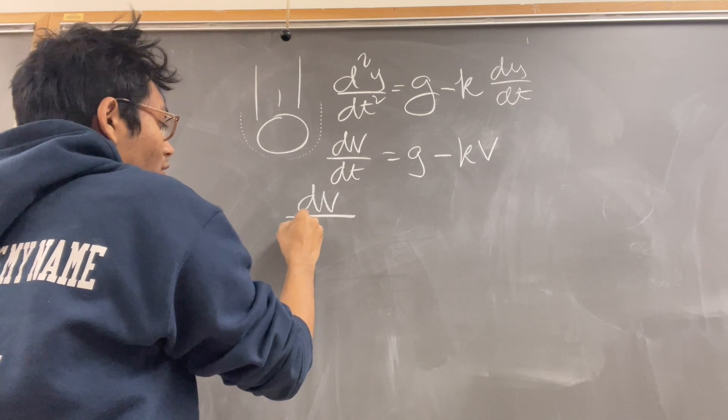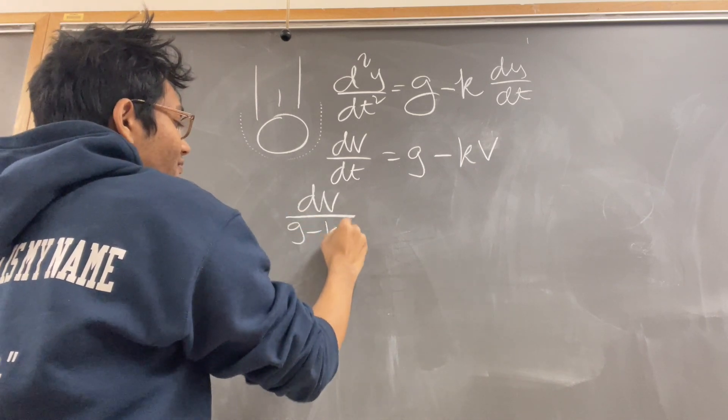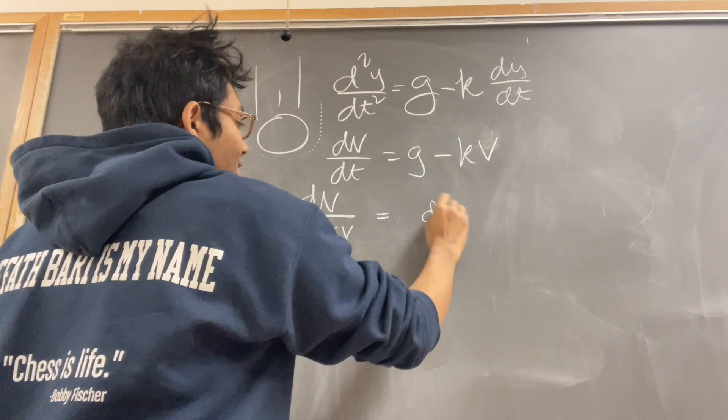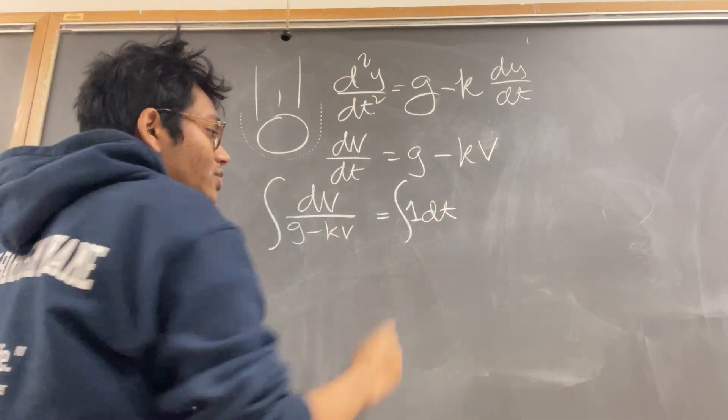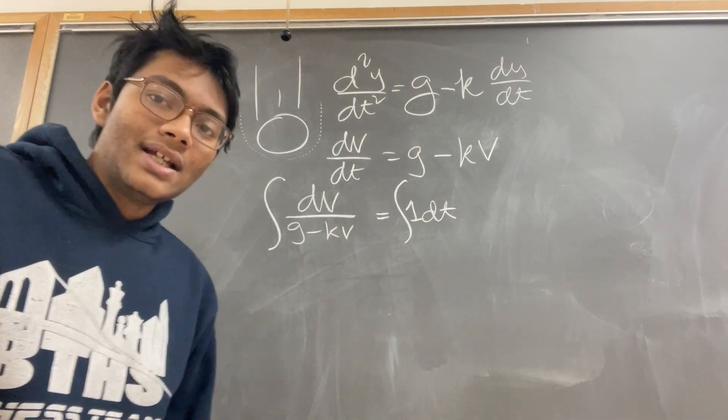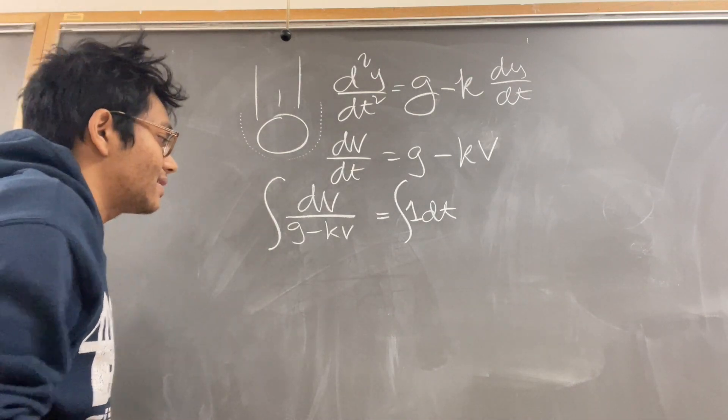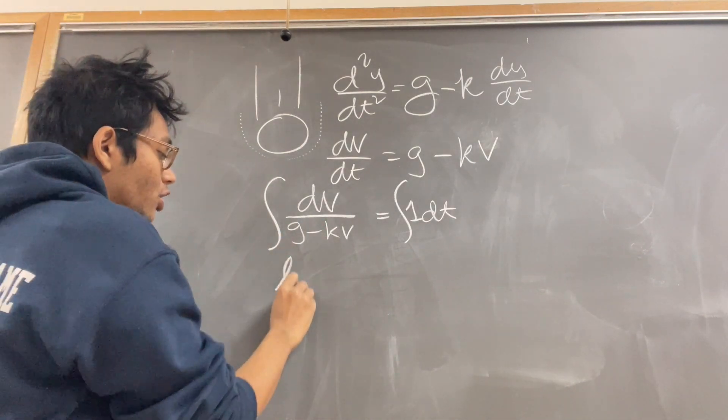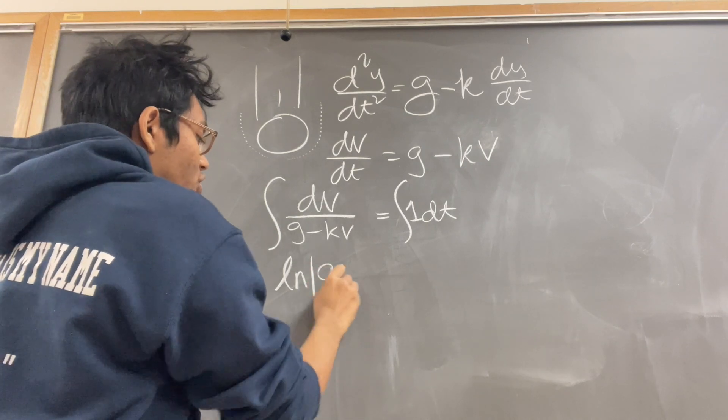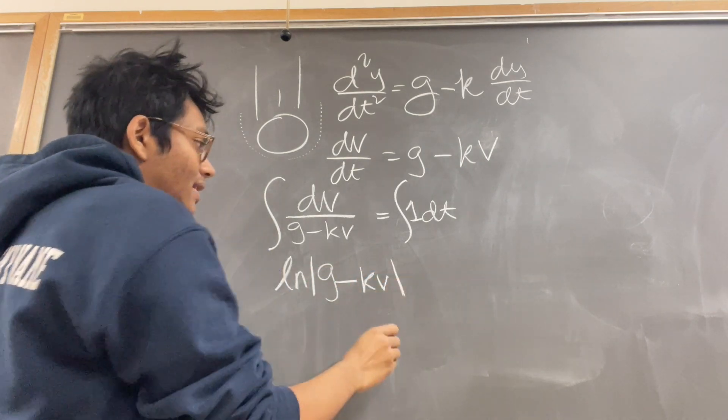So, dv over g minus kv is equal to dt. Integrate both sides with respect to their respective variables. A very nice line that I like to say. And so, this is going to be log of the absolute value of g minus kv is equal to...